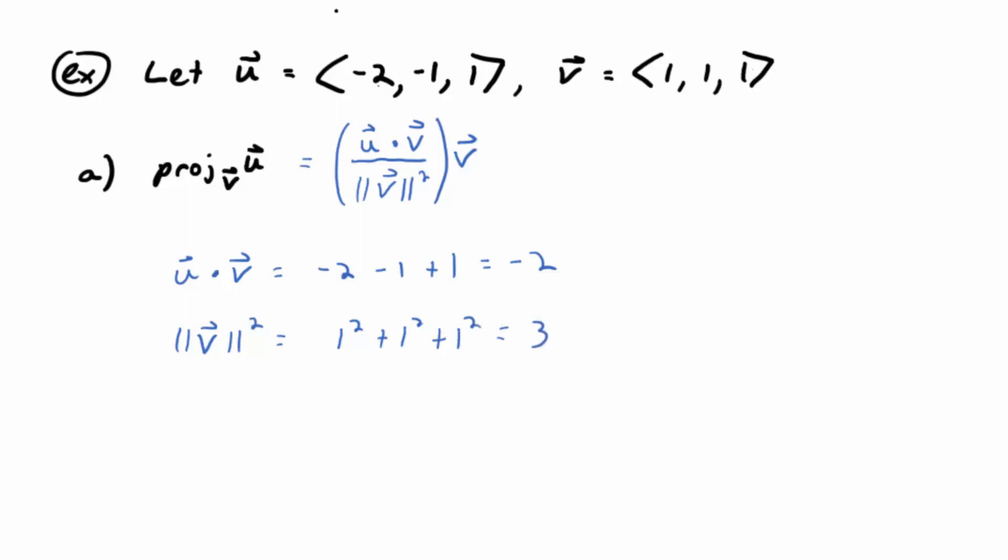Okay. So the projection then of u onto v is going to be what? Just what goes out in front? Negative 2 thirds. And then you could just write down the vector 1, 1, 1 if you want, or just v if you want. But for the next part of the problem, we're going to need to use it. So let's go ahead and do the scalar multiplication and get negative 2 thirds, comma, negative 2 thirds, comma, negative 2 thirds. So that's one way to write your answer.